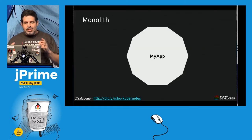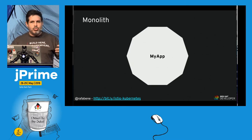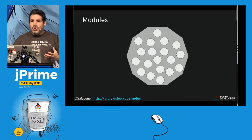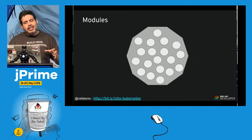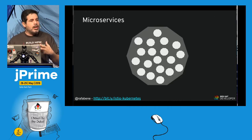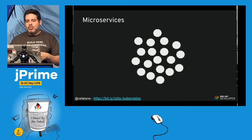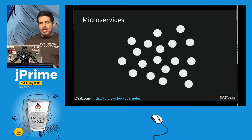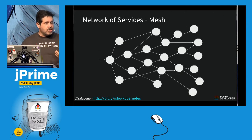Let's think about what we have until now. Most of us were producing monolithic applications — and inside those monoliths we had modules. We decided they shouldn't live together, so we created microservices. Because they don't live together, we spread them across different nodes, machines, and hosts, which creates a network of services — a service mesh.